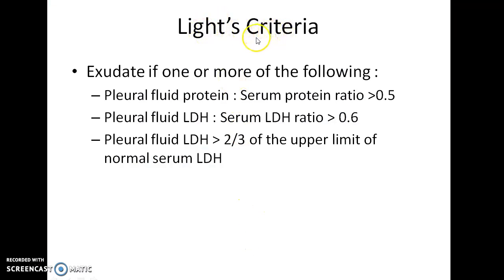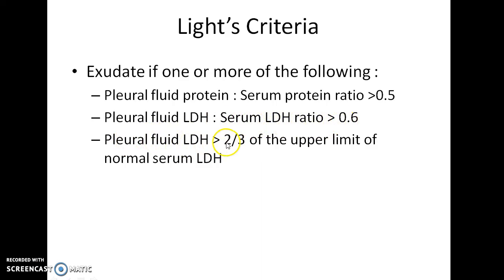Light's criteria is used to differentiate exudate from transudate. It is an exudate if one or more of the following are satisfied: pleural fluid protein to serum protein ratio greater than 0.5; pleural fluid LDH to serum LDH ratio greater than 0.6; or pleural fluid LDH greater than two-thirds of the upper limit of normal serum LDH.